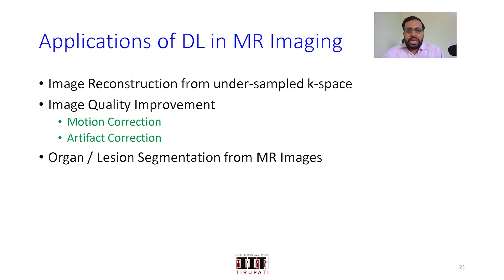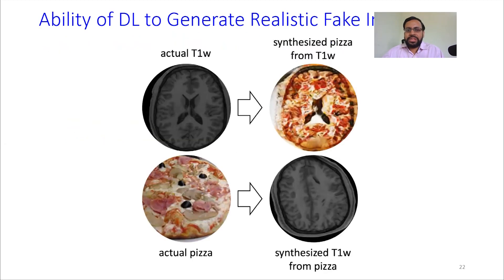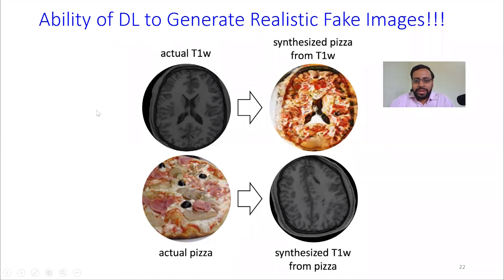Another area is organ and lesion segmentation from MRI images. This is also an area where there is a lot of scope.